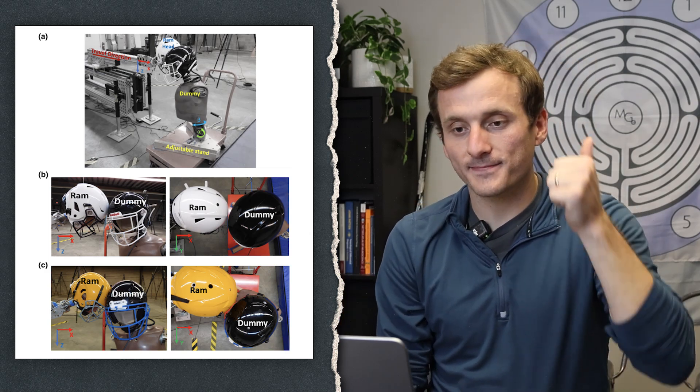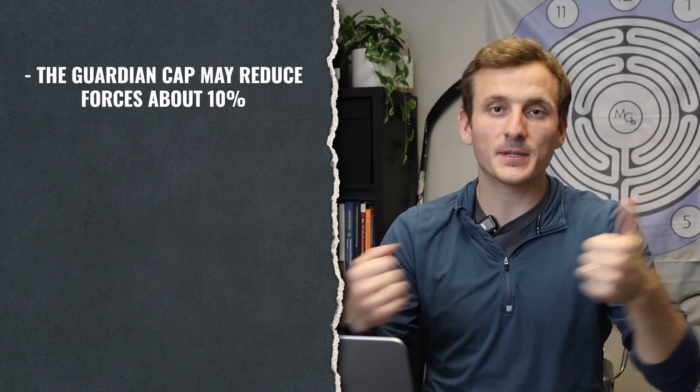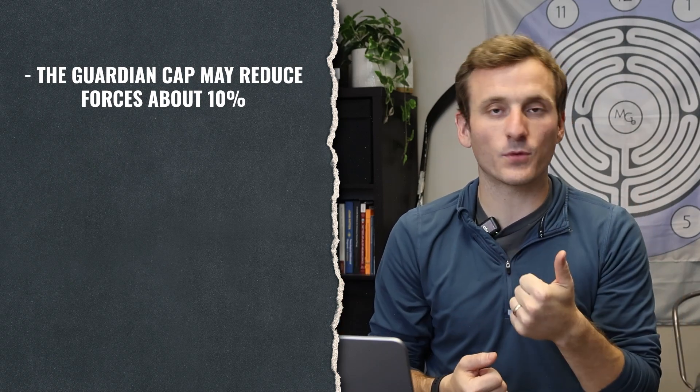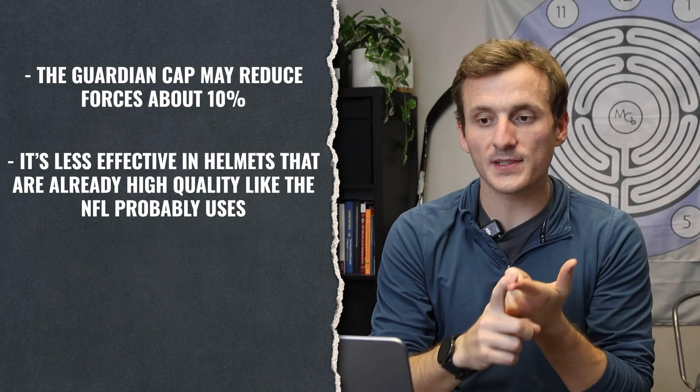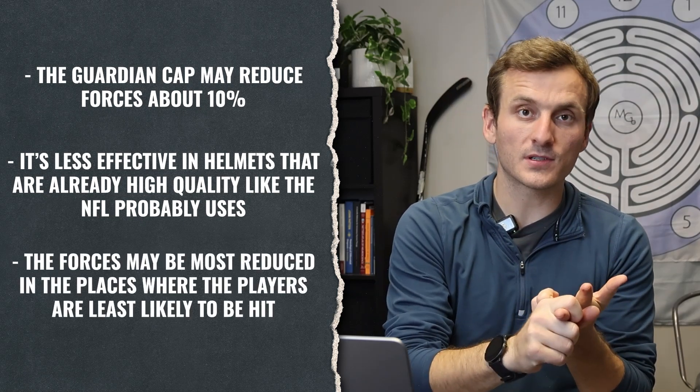So, to recap the lab data, we got three points. One, when we smash and crash test dummies and helmets together, the guardian cap may reduce forces about 10%, that's cool, but it's less effective in helmets that are already high quality, like the NFL probably uses, and the forces may be most reduced in the places where the players are least likely to be hit.